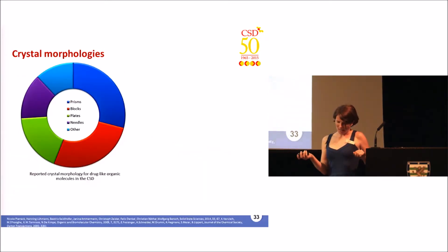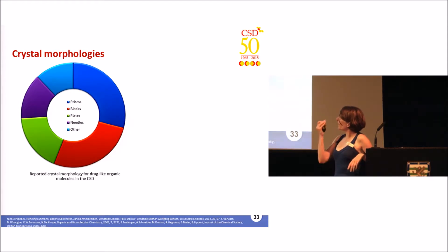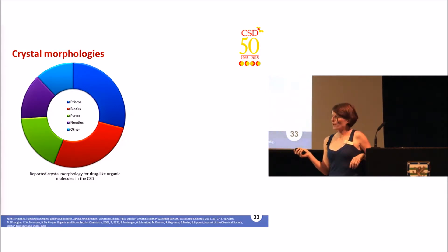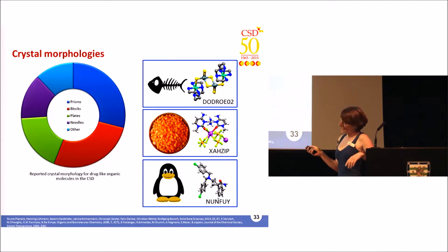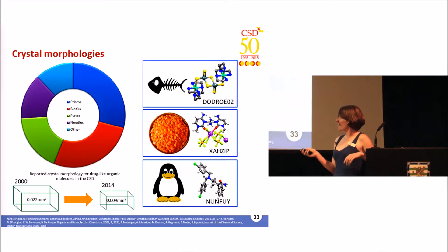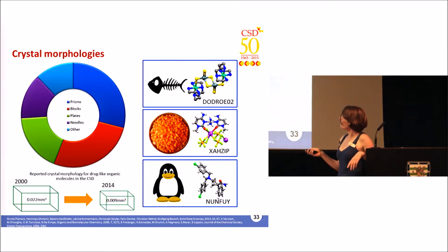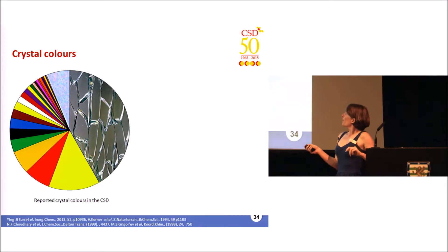In the CSD we can also look at crystal morphologies. The most common morphologies are prisms, blocks, and plates, but there's also an 'other' category that includes the usual suspects like rods and cubes — and some more quirky examples. Some of my favorites are 'fishbone,' 'lentil,' and probably my personal favorite, 'penguin.' The other thing we can track is how crystal size has changed: in the last 14 years the size of crystals reported in CIF files has more than halved.